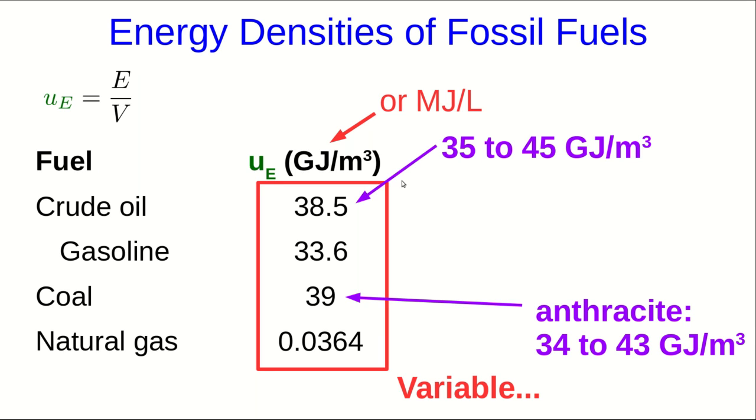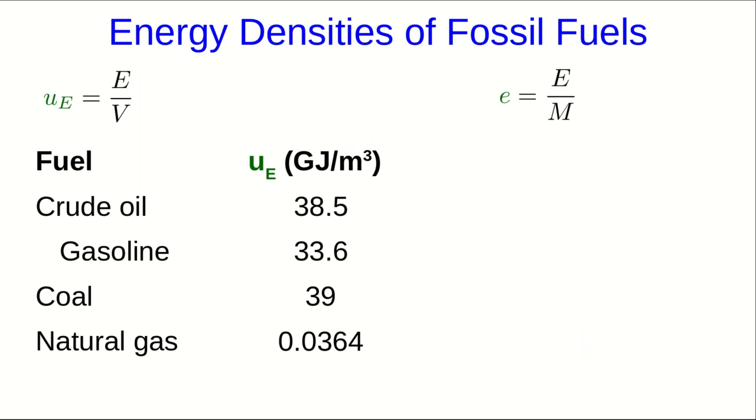It's important to note that the energy density of natural gas is much, much lower than these others. But the reason for that is simple to understand. It is a gas and has a low mass density. If we instead look at the specific energy, energy per unit mass, then we find that natural gas is comparable, and in fact higher, than the others.